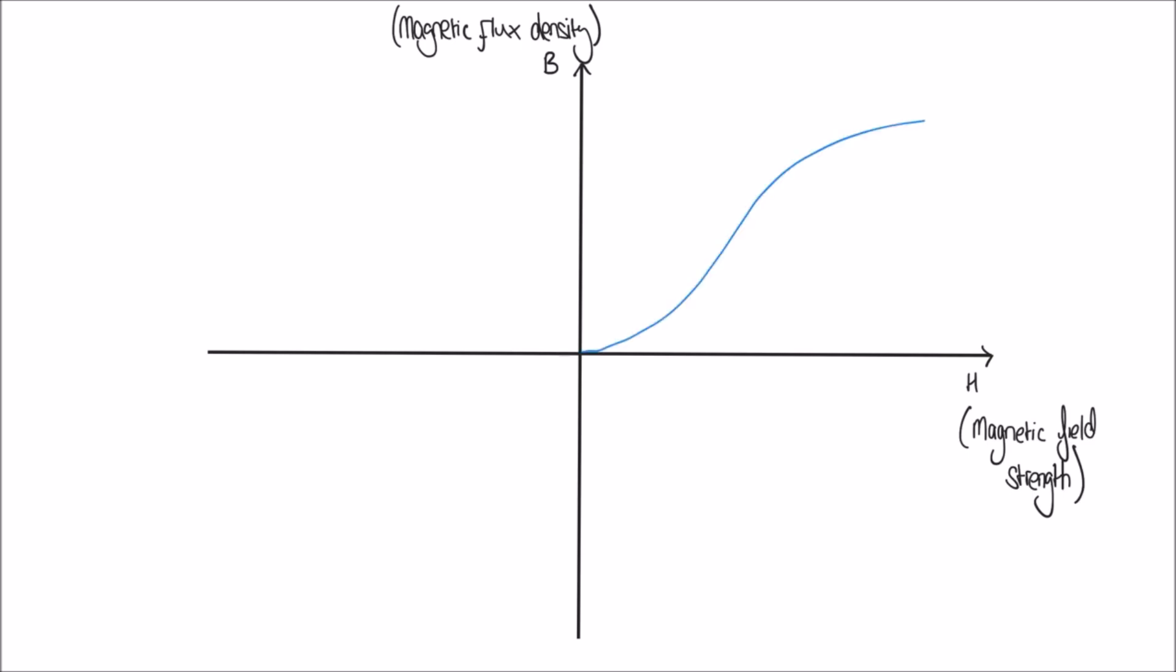We've increased the magnetic field strength by bringing a magnet close to our paper clips, and the paper clips have become magnetized. Their magnetic flux density has increased. We will reach a point where we've magnetized those paper clips as much as we possibly can. And so we reach this point where the graph levels off, and we call this the saturation point. So I'll mark that on here as saturation. And this means that the paper clips in our analogy have been magnetized as much as possible.